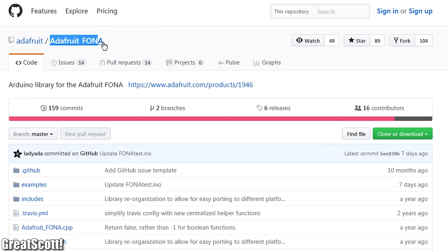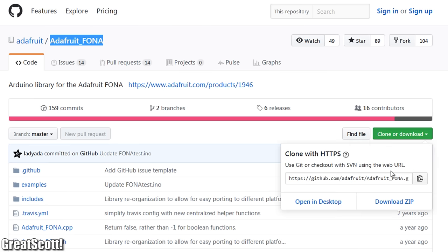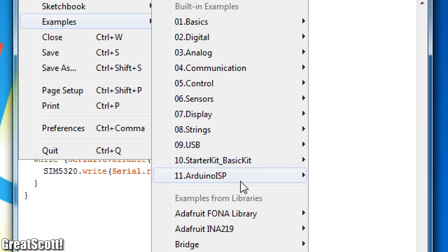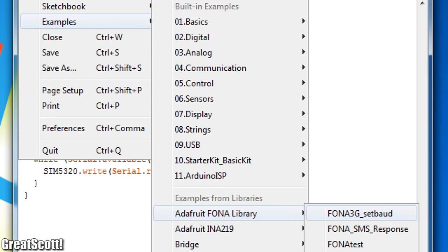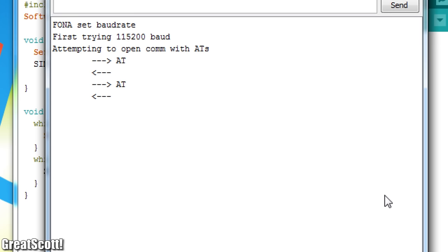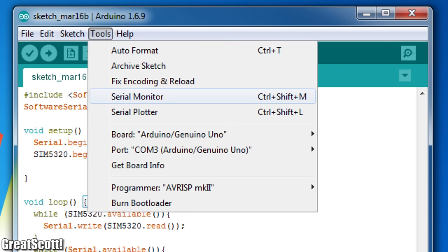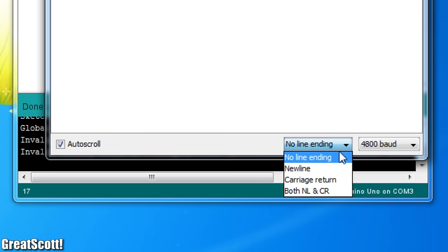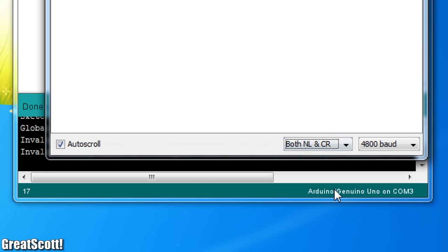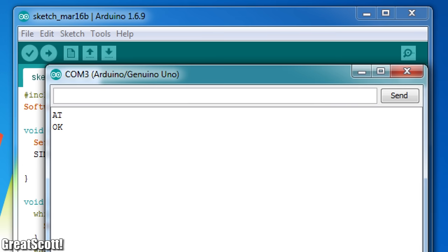The reason for that is that I used the Adafruit Fona library with its example sketch set baud rate beforehand in order to change it. But getting back to topic, after uploading the software serial sketch, we can open the serial monitor, set the baud rate and both new line and carriage return and send over the command AT. If the board replies with OK, everything works fine.